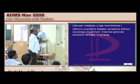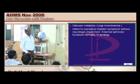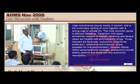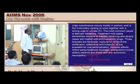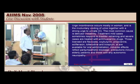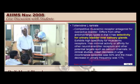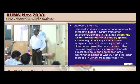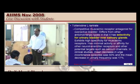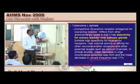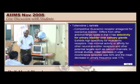In urge incontinence, we use flavoxate, oxybutynin, solifenacin, and trospium. Tolterodine is a competitive muscarinic receptor antagonist of the detrusor. Acetylcholine stimulation — muscarinic stimulation — anything that antagonizes muscarin will weaken the detrusor. So tolterodine, a muscarinic receptor antagonist, brings down that hyper-irritable detrusor and helps a patient of urge incontinence.